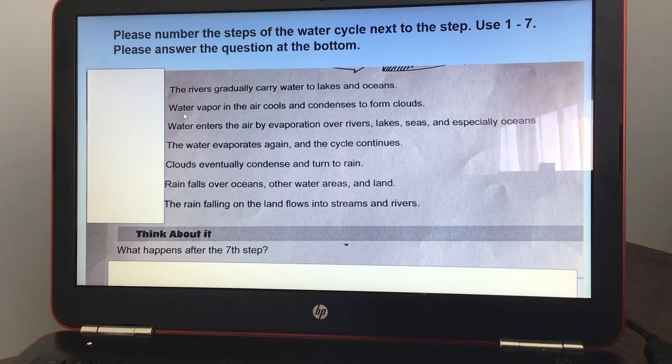Number two, water vapor in the air cools and condenses to form clouds. So that should be number two. Number three, clouds eventually condense and turn to rain. So you should have a number three here.